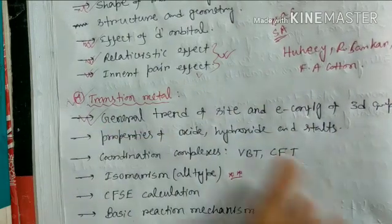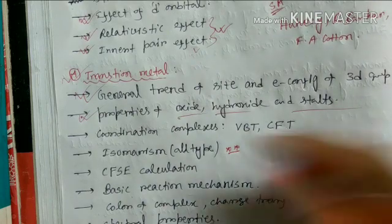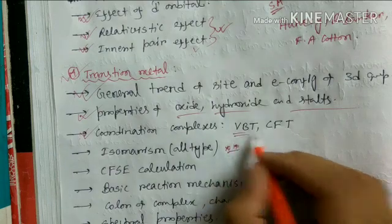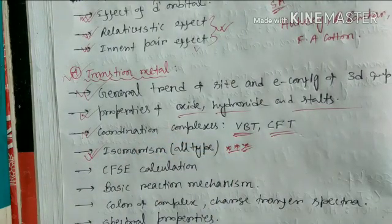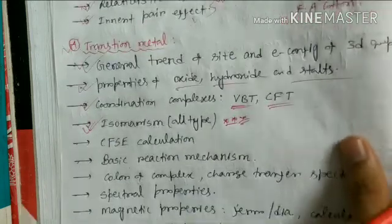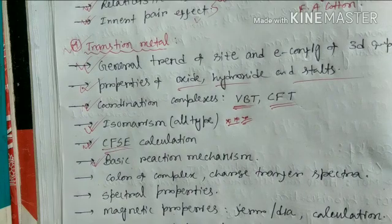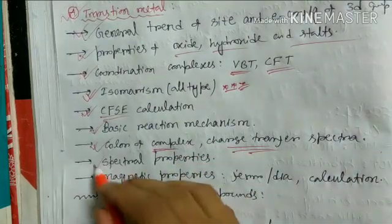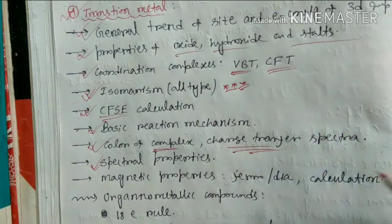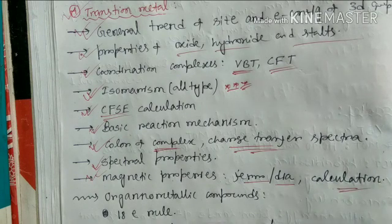For transition metal chemistry, do the general trends for size and electronic configuration of d-block elements, and the properties of oxides, hydroxides, and salts. The most important part is coordination chemistry: valence bond theory and crystal field theory, and all types of isomerism — geometrical isomerism, optical isomerism, and all other types listed in your book. Then the calculation of crystal field stabilization energy (CFSE), basic reaction mechanisms like the trans effect, the color of transition metal complexes, charge transfer spectra, spectral properties, and magnetic properties — including calculation of magnetic moment in Bohr magneton units.